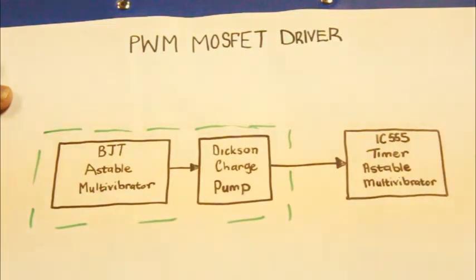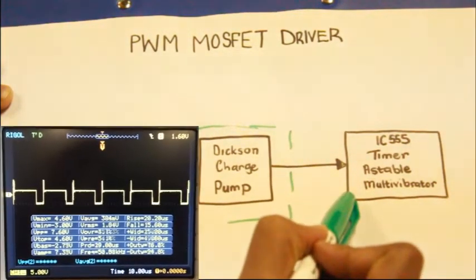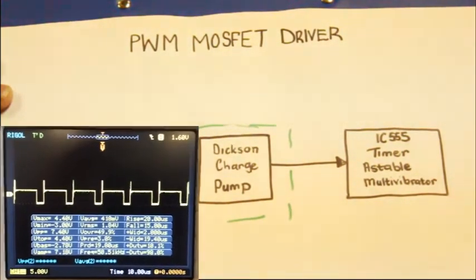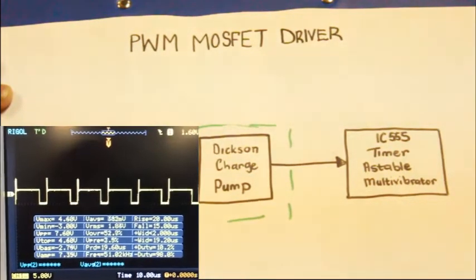The clocking signal is generated by the IC 555 timer astable multivibrator circuit which produces a 51 kilohertz square wave signal with a peak voltage of 4.6 volts and a fixed duty cycle of 75 percent.